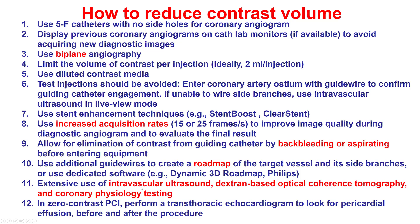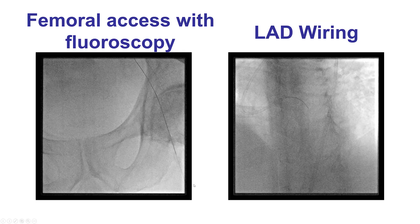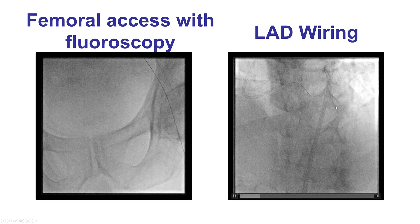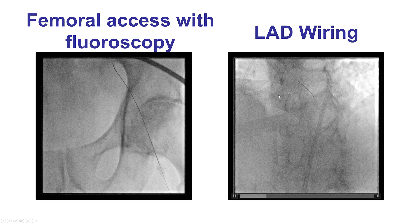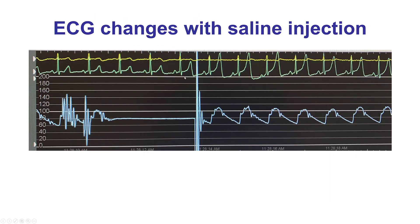Probably the most important measure we used to minimize contrast use was extensive use of intravascular ultrasound. Femoral access was obtained. The left main was engaged with an EBU guide catheter, and engagement was confirmed with saline injection instead of contrast, which did cause some EKG changes.